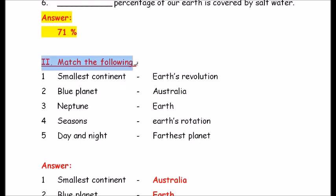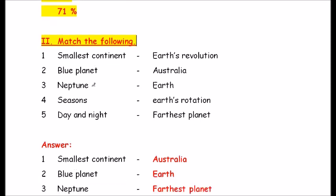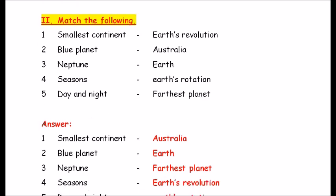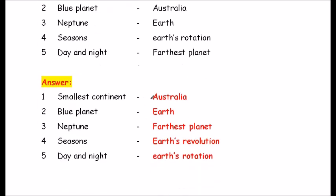Roman number 2 — Match the following. Question 1: Smallest continent; 2: Blue planet; 3: Neptune; 4: Seasons; 5: Day and night. Answers: Smallest continent — Australia; Blue planet — Earth; Neptune — farthest planet; Seasons — Earth's revolution; Day and night — Earth's rotation.